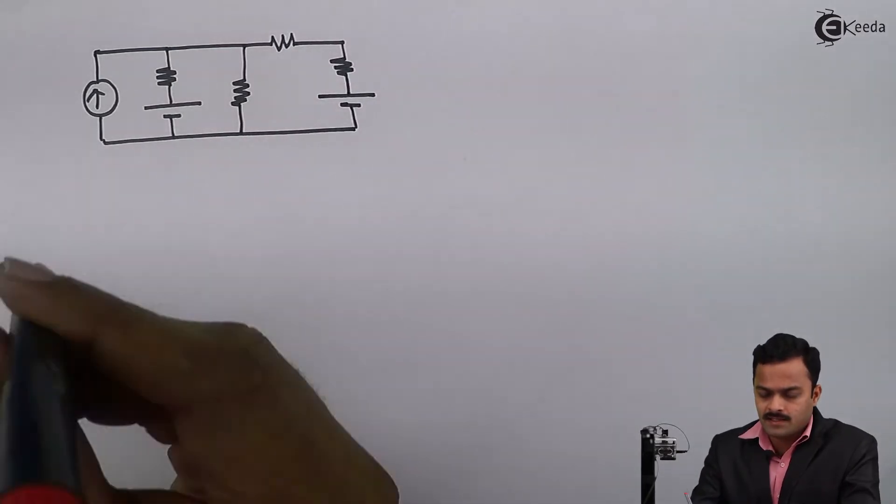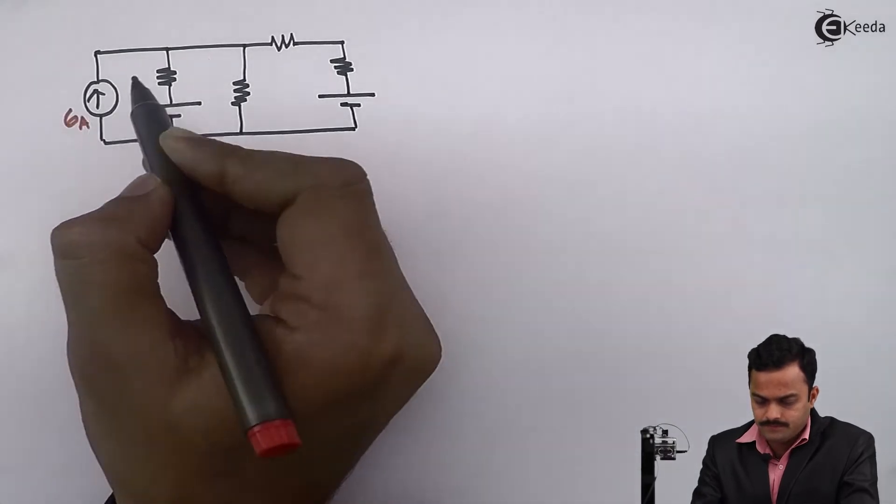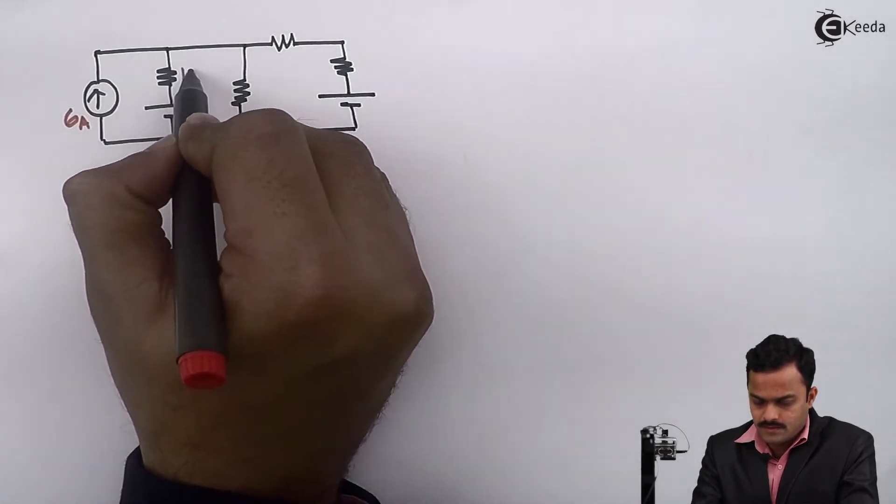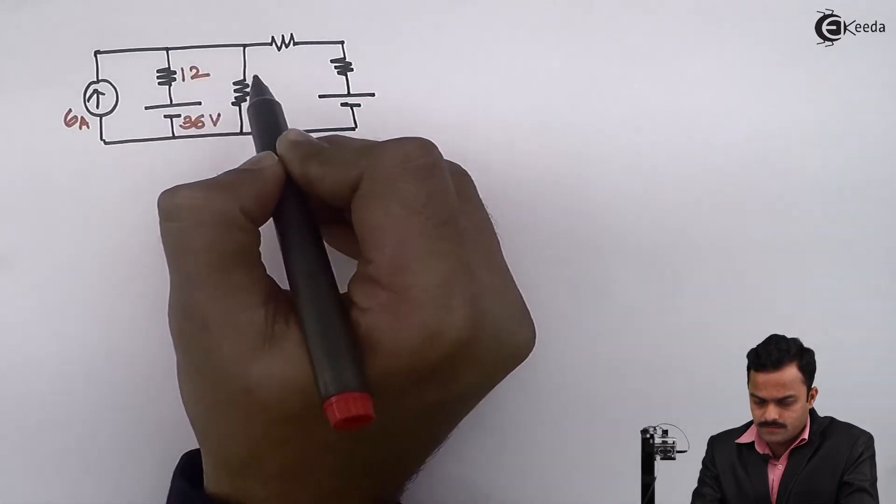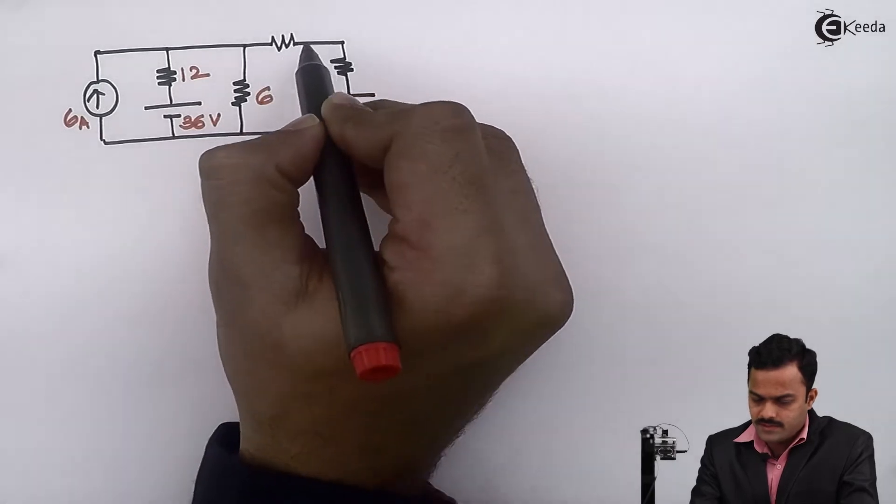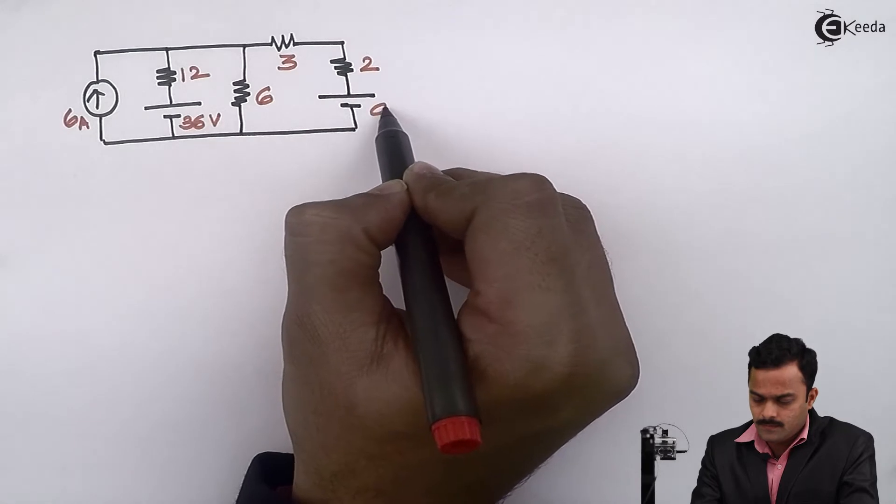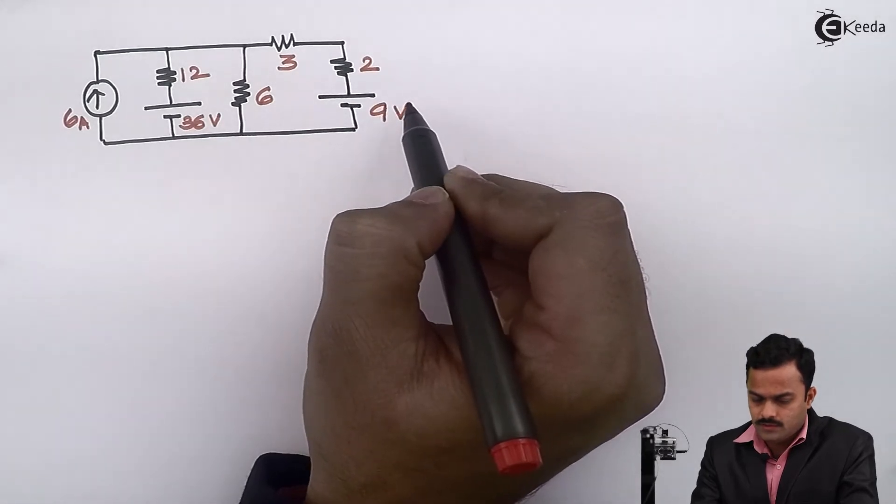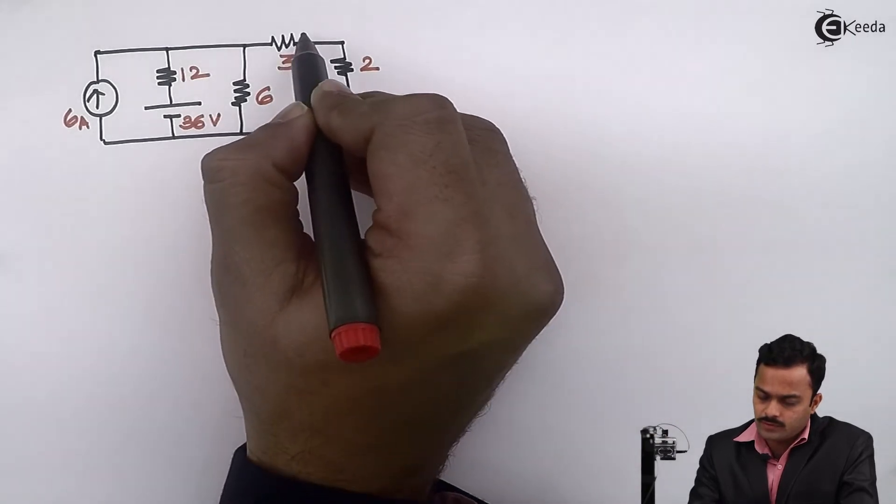Let's take a current source of 6 amperes. This resistor is 12 ohms, this is 36 volts, 6 ohms, 3 ohms, 2 ohms, and 9 volts. The objective is to find the current flowing through the 3 ohm resistor using source transformation.